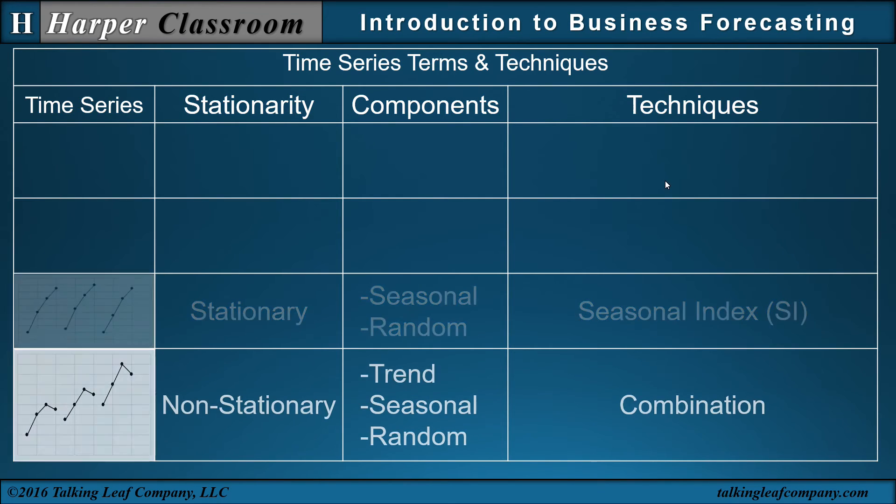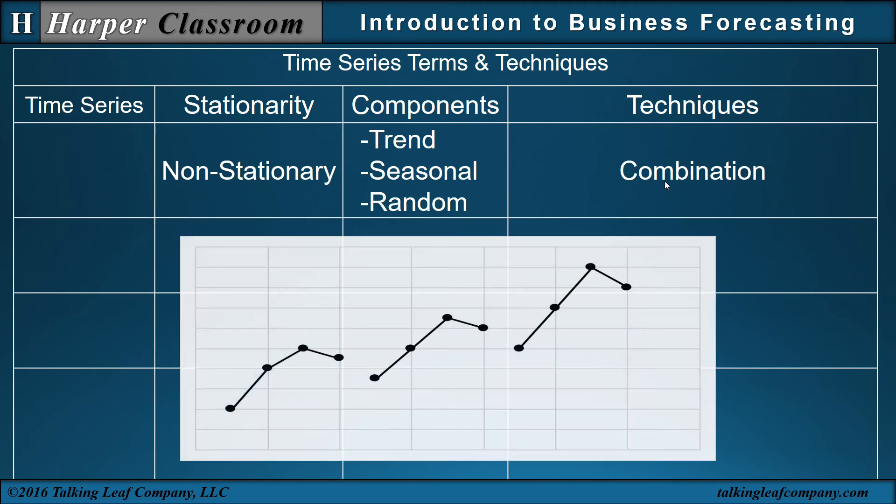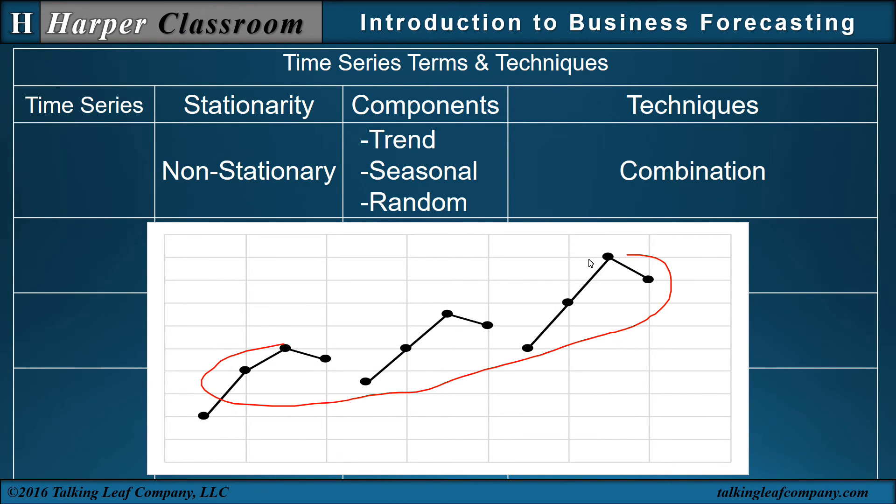Now finally, the last time series, if we plot that, we see that we do have a non-constant time series. So it's non-stationary. So we do have a trend. But also, we have a pattern, if this is a quarterly time series, we have a pattern that repeats every year in this quarterly time series. So here we also have a seasonal component.